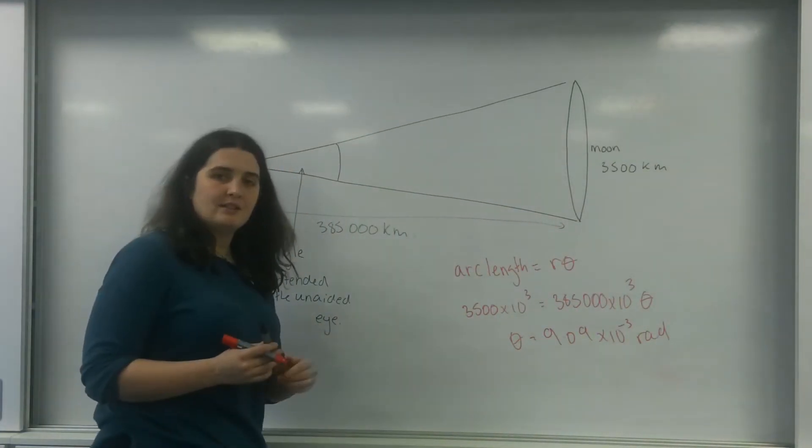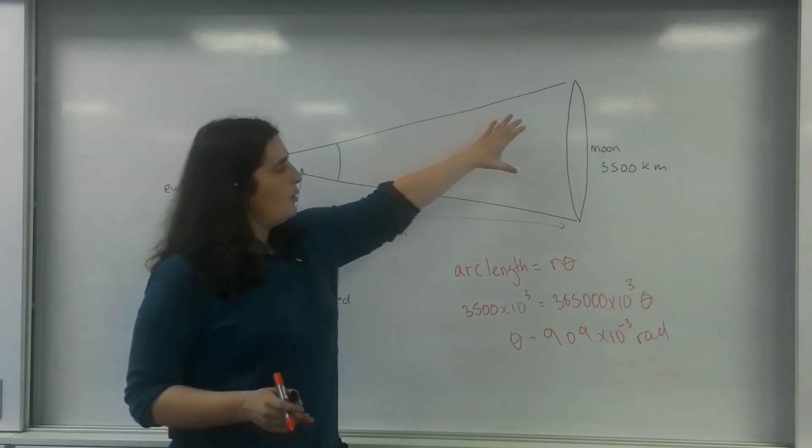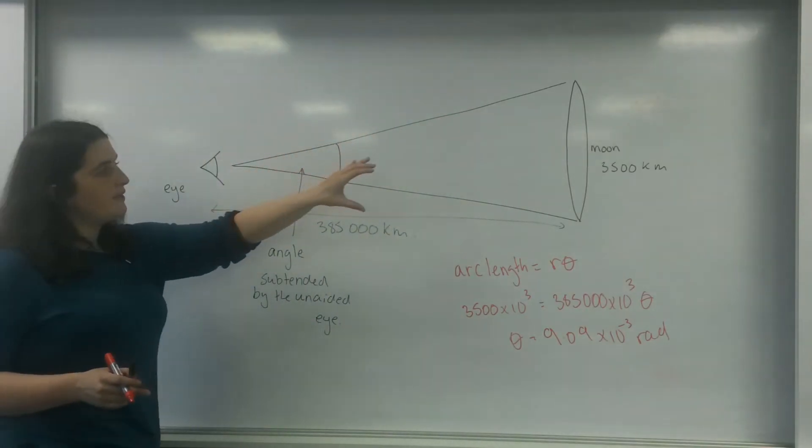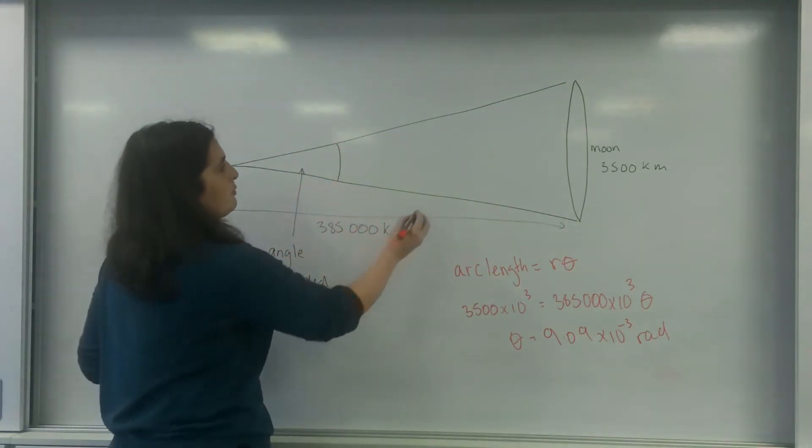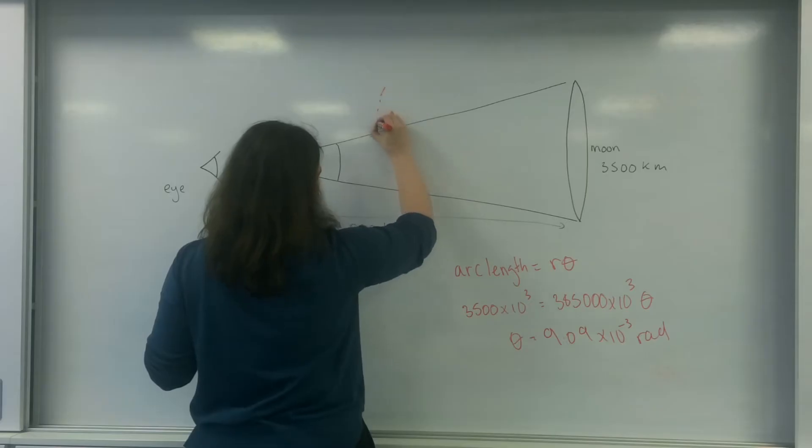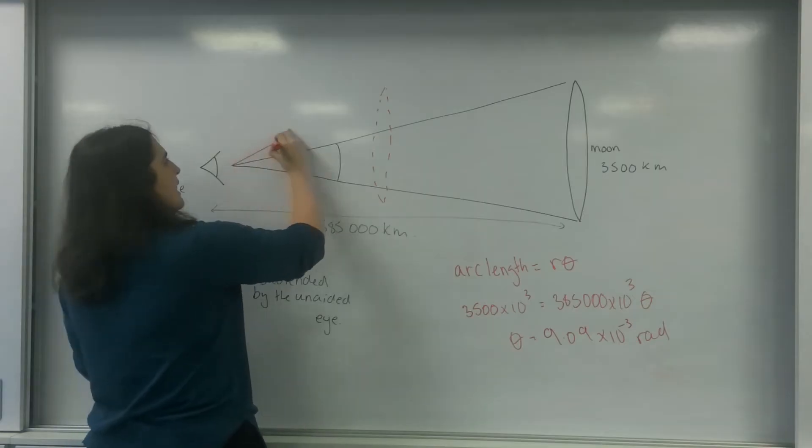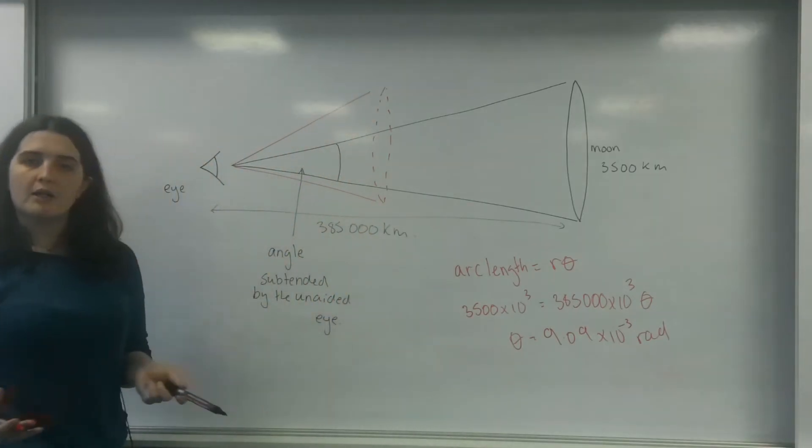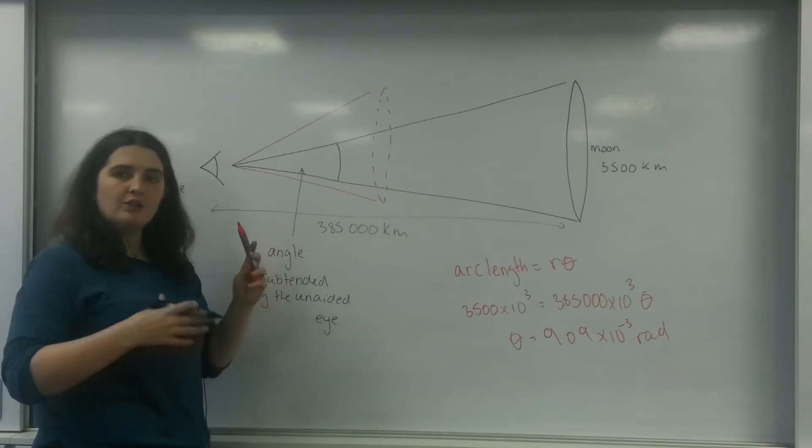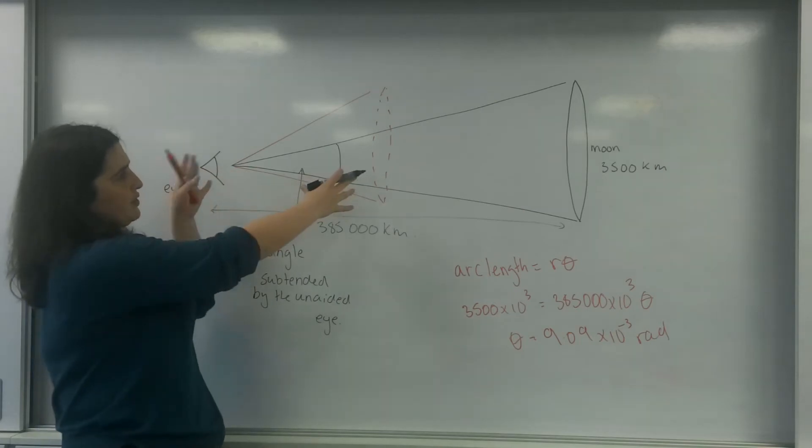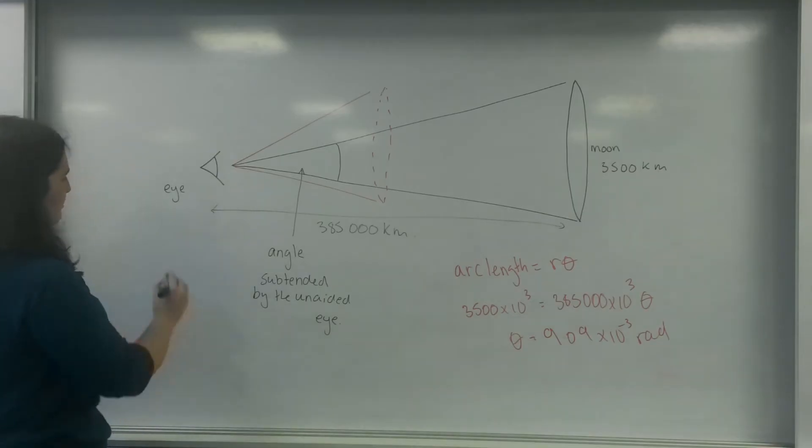Now, if I was going to get a telescope and I was going to magnify it, what would happen is this moon would look closer. And if this was closer, but the same size, so I'm going to draw an imaginary one here. The angle I would see would be much bigger. So angular magnification is how much bigger am I making this angle look? In other words, how much closer am I making it?